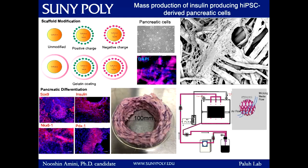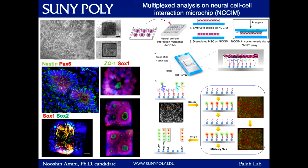We were able to identify a surface that gave us 10-fold expansion of these cells and 3-fold insulin production in the bioreactor compared to the dish. In the SEM image, you can see the cells on the scaffold and the production of extracellular matrix, showing that cells are adapting to their environment and are viable under the scaffold. For the second project, we are focusing on multiplex analysis on a neural cell-cell interaction microchip using neural rosettes — stem cells committed to neural lineage.